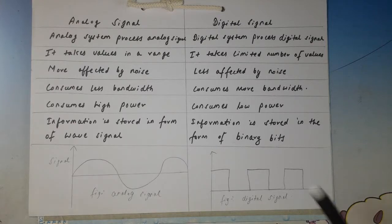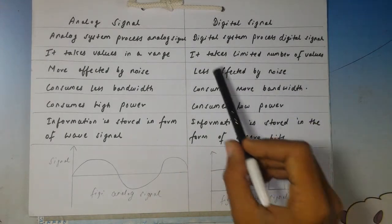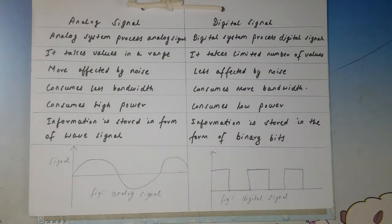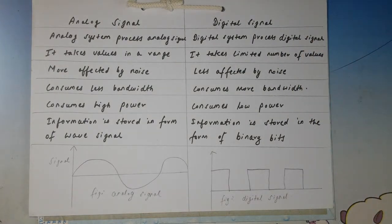Analog signal takes values in a wide range. For instance, an analog thermometer can give temperature readings of 98.1, 98.2, 98.3, and even finer subdivisions. But digital signal takes a limited number of values — like 98 or 97 degrees, or in centigrade 36 or 37. Digital signal stores values in the form of 0 and 1, which is not the case for analog signal.